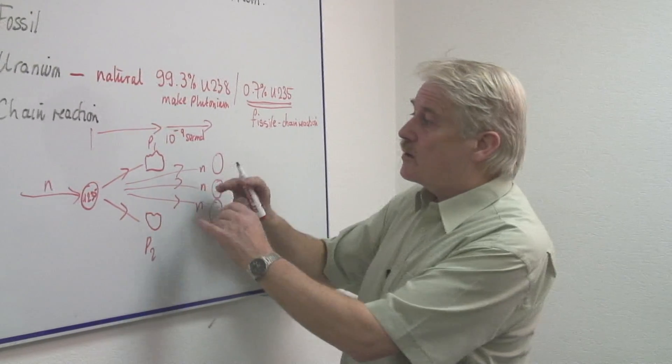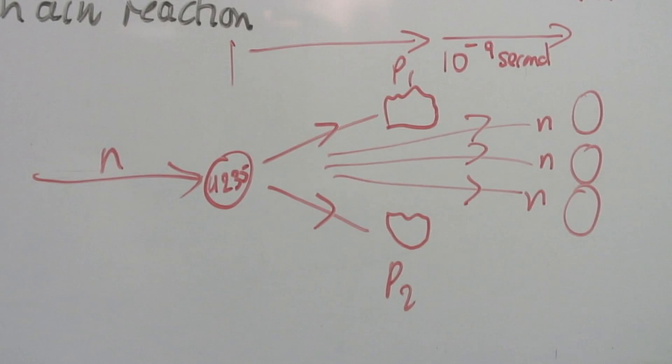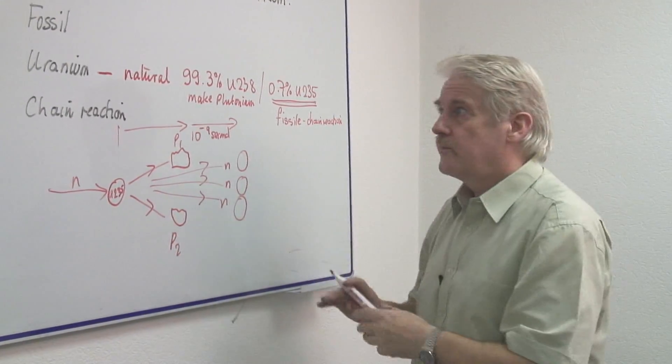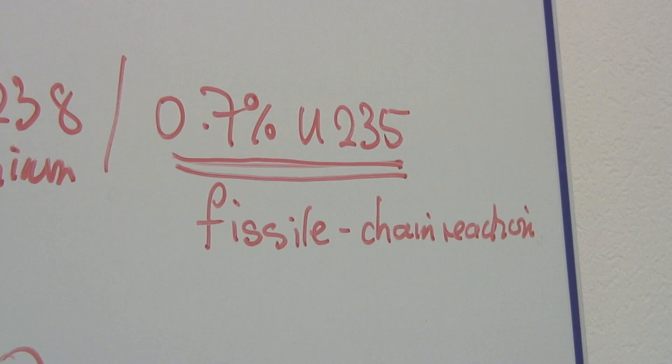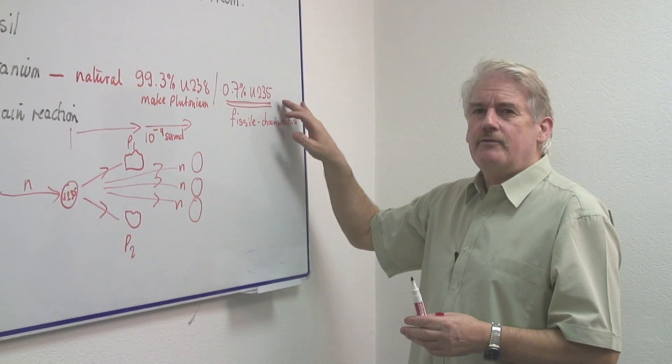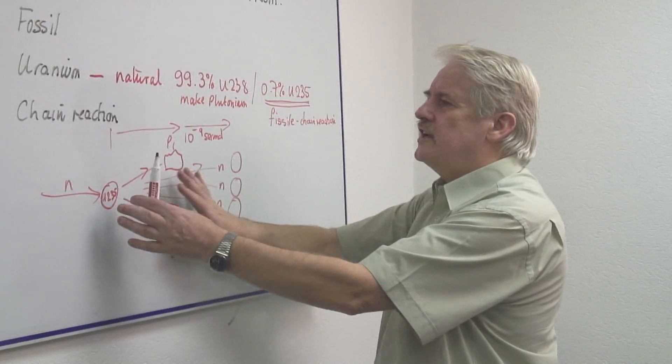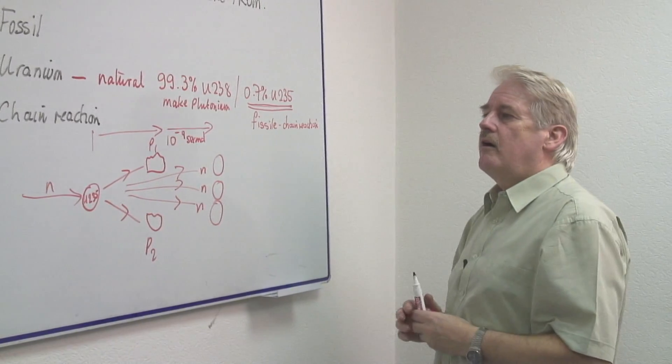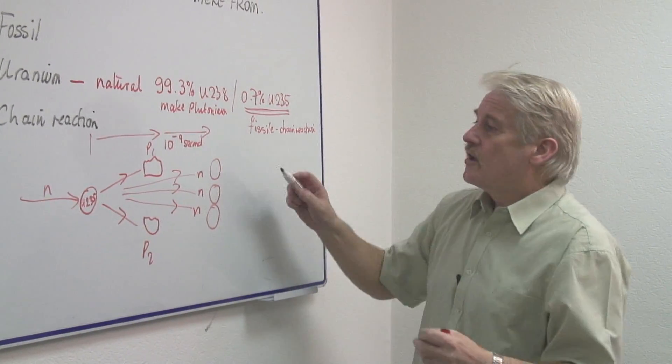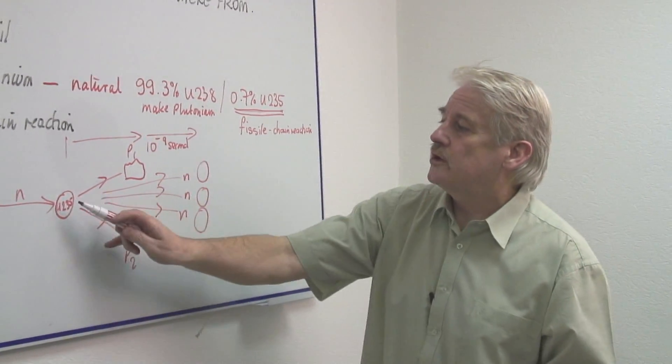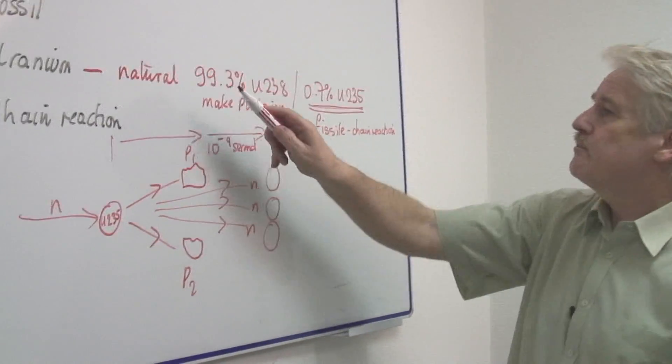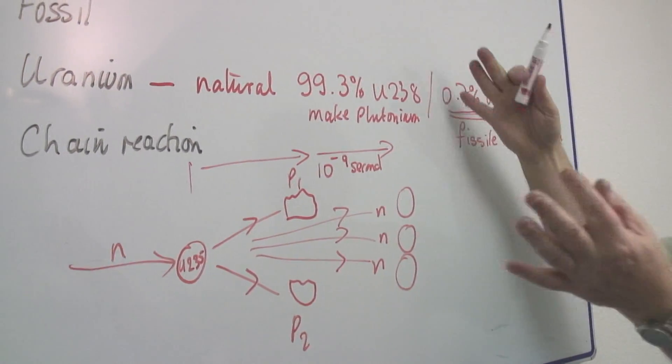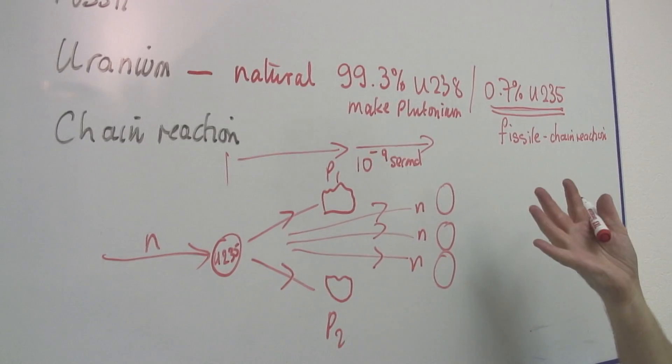But unfortunately, most of these neutrons actually disappear and don't produce reactions, luckily. And in nature, of course, these reactions occur. But so very few. And they don't turn into this type of reaction. Because most of these would not be uranium-235. They'd be uranium-238, which absorbs a neutron.